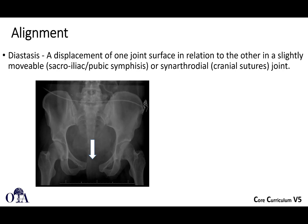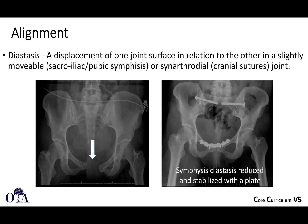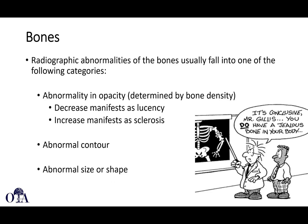Diastasis is a term you may hear used frequently for something like the pelvis — it's a displacement of one joint surface relative to the other in a slightly movable or synarthrodial joint. When you have this widening in the pubic symphysis, we often say there's diastasis. In this case, the diastasis has been reduced and stabilized with a plate, and you can see posteriorly there are also some ileosacral screws.